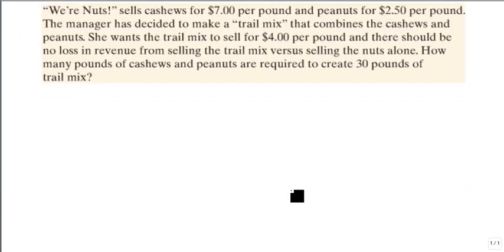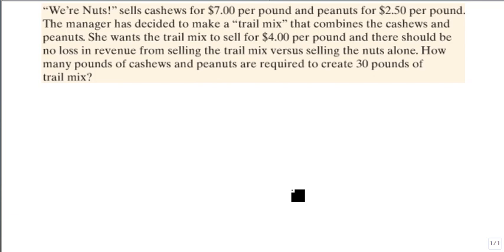So in this case, we're going to talk about We're Nuts. They're a place that sells cashews for $7 per pound and peanuts for $2.50 per pound. The manager has decided to make a trail mix that combines the cashews and peanuts. She wants the trail mix to sell for $4 per pound, and she doesn't want to lose any revenue due to mixing the trail mix versus selling the nuts alone.